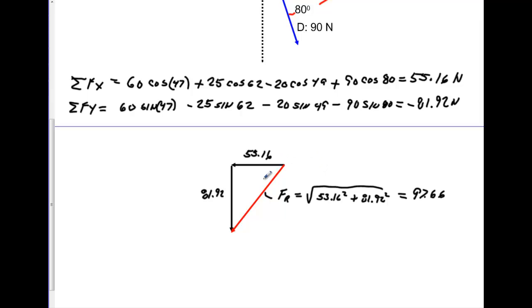So that's going to be our resultant vector. And now we'll go ahead and find this angle out here. Again, we know that theta is equal to the inverse tan of the opposite over adjacent. 81.92 divided by 53.16. That will give me theta. So 81.92 divided by 53.16. Second tan, second answer. It gives me an angle of 57.02 degrees.